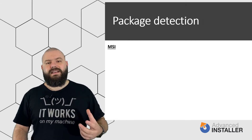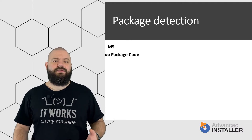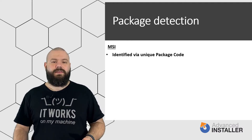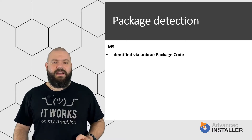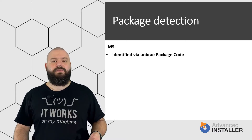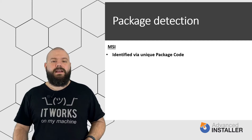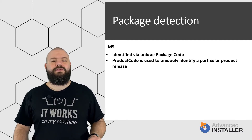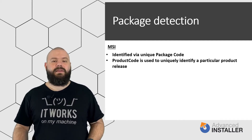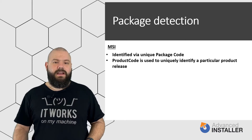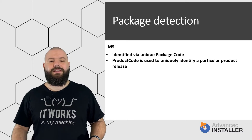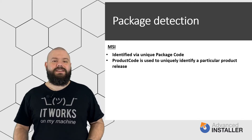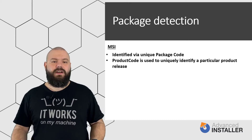MSI packages are identified using a unique package code. Windows installer does not allow two different MSI packages with the same package code to be installed on a machine. The product code is used to uniquely identify a particular product release, and Windows installer allows only one program with a given product code to be installed on a computer at a time, preventing the installation of a second MSI with the same product code.